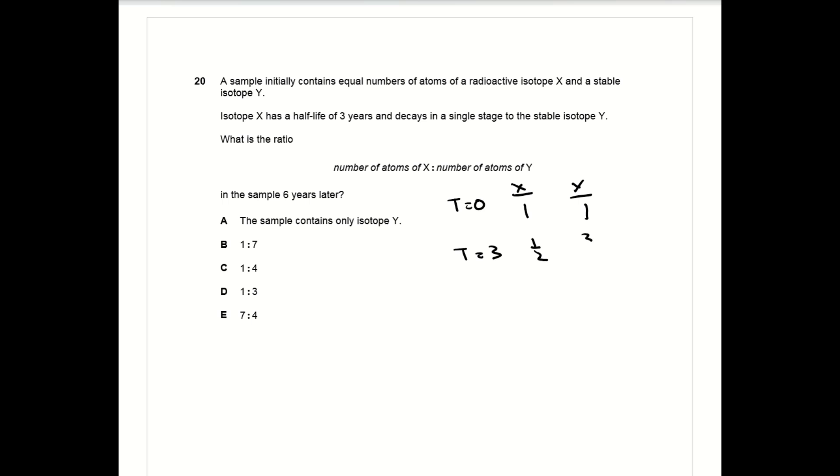After one half-life, t equals three, x goes down to half of its original value so x is down to a half. The half of x that has decayed becomes y, so y is now three over two.